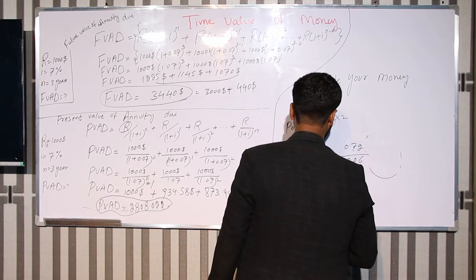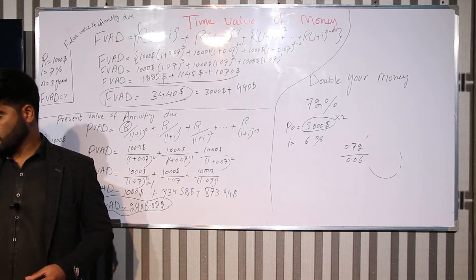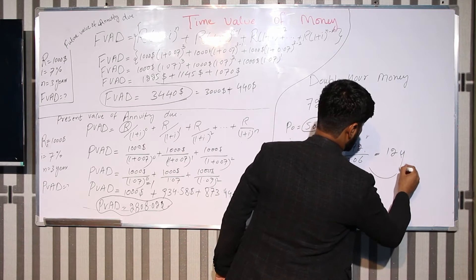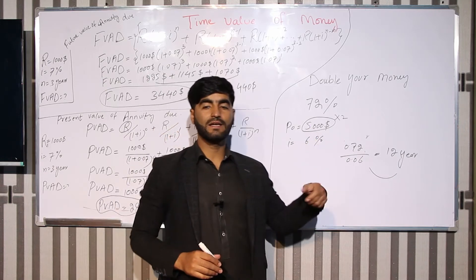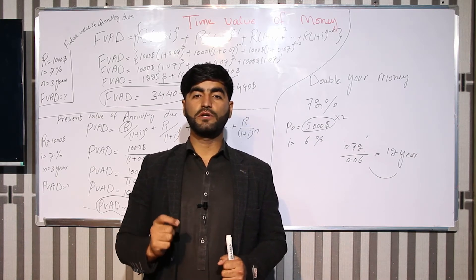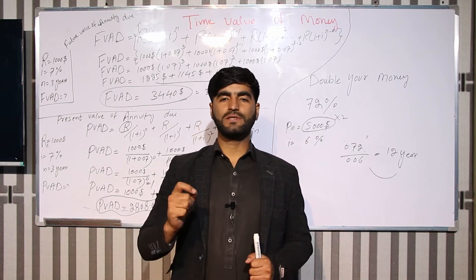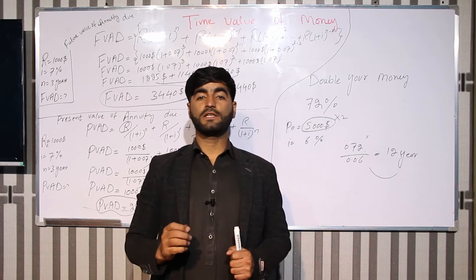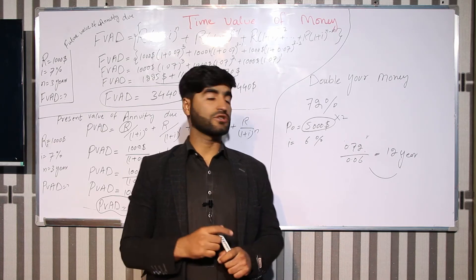The Rule of 72 is a simple way to find how long it takes to double your money — calculated as 72 divided by the interest rate, which is a market interest rate.